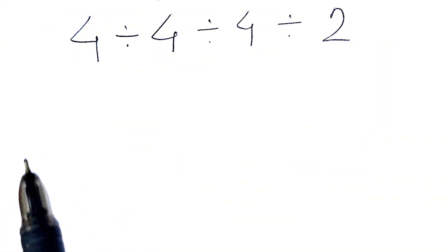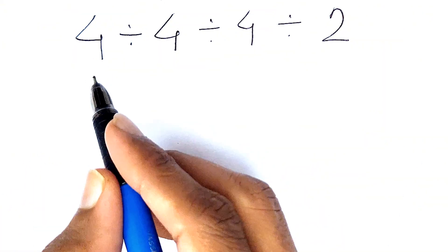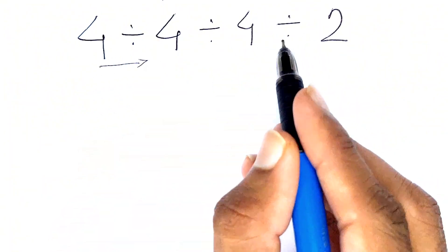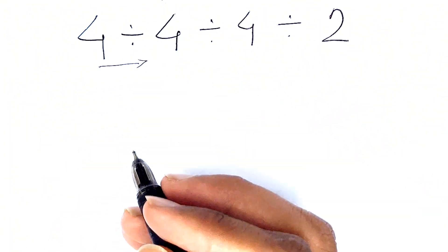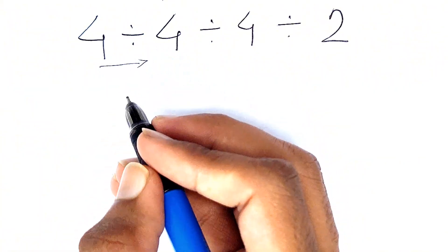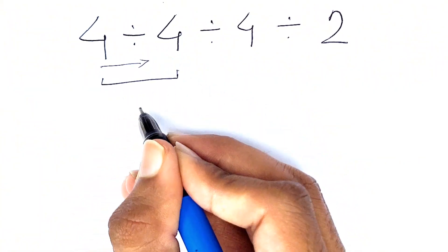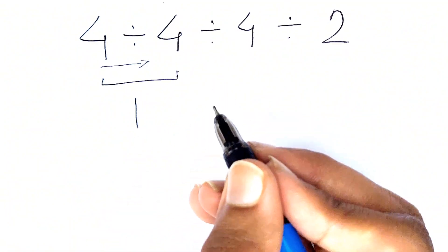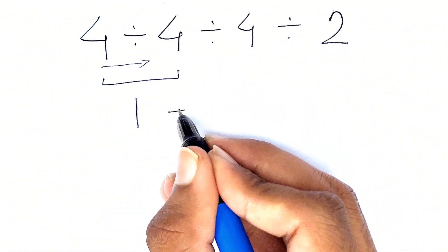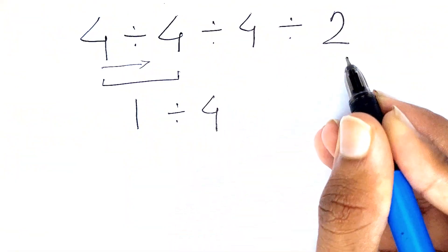Are you ready to solve? Let's find out. In this expression we need to go from left to right because all the signs are division. So first we need to solve this 4 divided by 4, that gives us 1. And now we rewrite the expression as it is, that is 1 divided by 4 divided by 2.